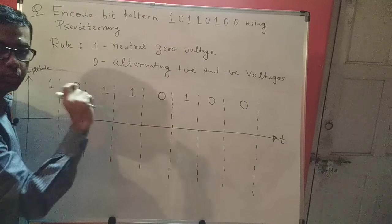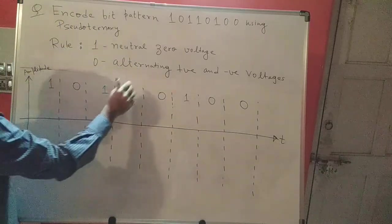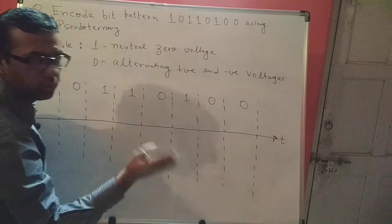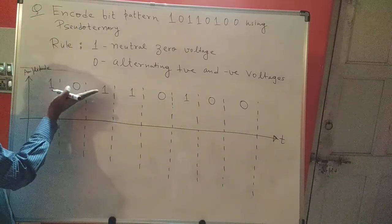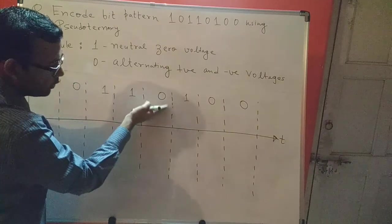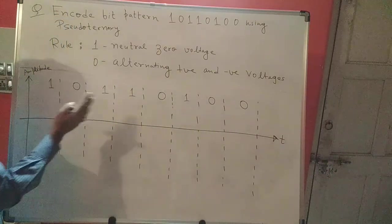1 represents a neutral zero voltage along the time axis, and 0 represents alternating positive and negative voltages. That means for this 0, if you are above the time axis, then for the next 0 you will be below the time axis as far as your signal is concerned. So let's see how we can do this.